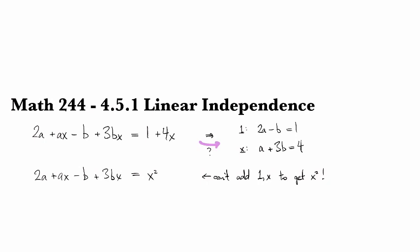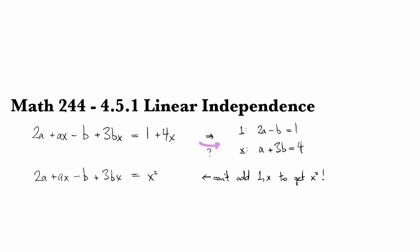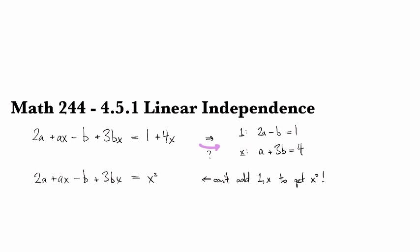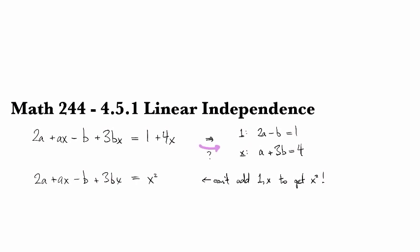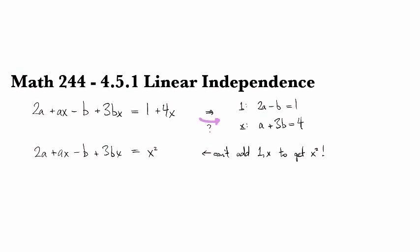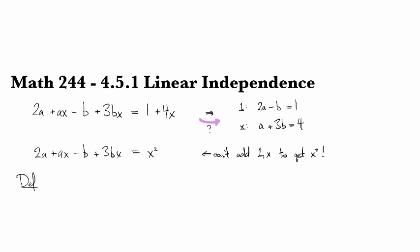Well, why not? Why can't you add those up to get x squared? The answer is because 1, x, and x squared form a set that's linearly independent. So you can't get one from the other. So this is the idea that we're looking at.